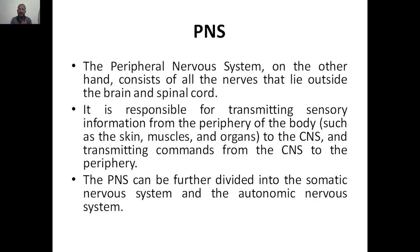That is what we explained in the CNS. Now, PNS — Peripheral Nervous System — that is all other parts of our body. On the other hand, it consists of all the nerves that lie outside the brain and spinal cord. Whatever nerves are not present in the brain and spinal cord are all present in the PNS. It is responsible for transmitting sensory information from peripheral body such as skin, muscle, and organs to the CNS, and transmitting commands from the CNS to the periphery.